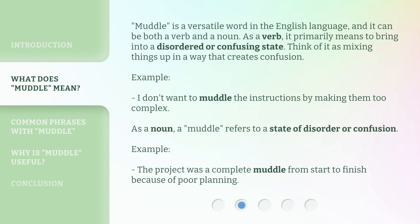Muddle is a versatile word in the English language, and it can be both a verb and a noun. As a verb, it primarily means to bring into a disordered or confusing state. Think of it as mixing things up in a way that creates confusion. Example: I don't want to muddle the instructions by making them too complex. As a noun, a muddle refers to a state of disorder or confusion. Example: the project was a complete muddle from start to finish because of poor planning.